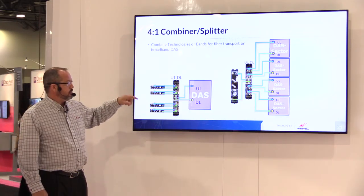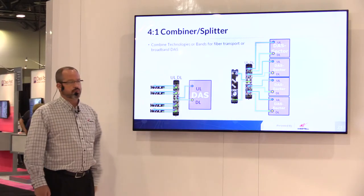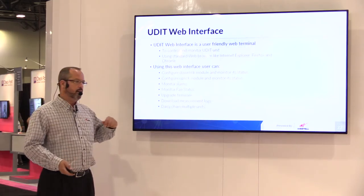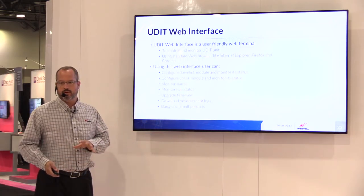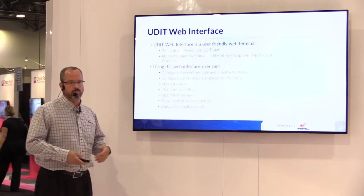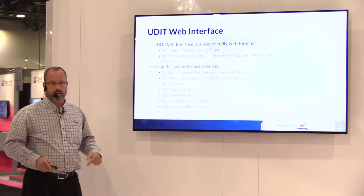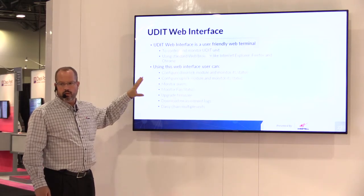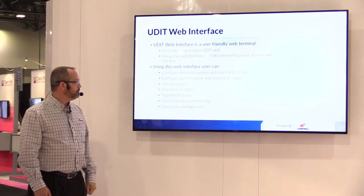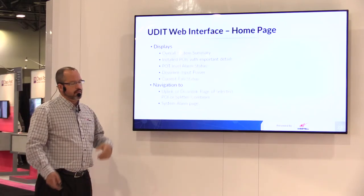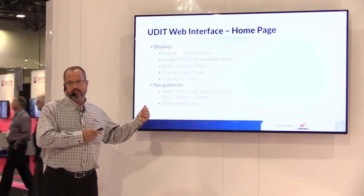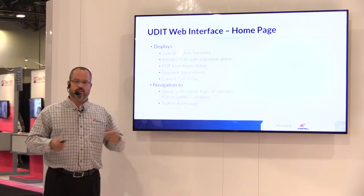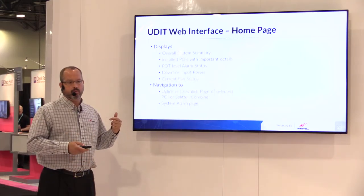The combiner-splitter allows you to either combine sectors or split them out to multiple zones. The web interface is very simple — as easy as I've seen. You can look at individual POIs and look at the uplink and downlink individually. We have a new user interface where you can see just everything on one page. You can monitor alarms and fan status. We're compliant with all the known monitoring systems that the carriers are currently using. The biggest benefit is the ability to remotely access the conditioner and make changes on the fly — you don't necessarily have to roll a truck out to make a change if there's an issue.